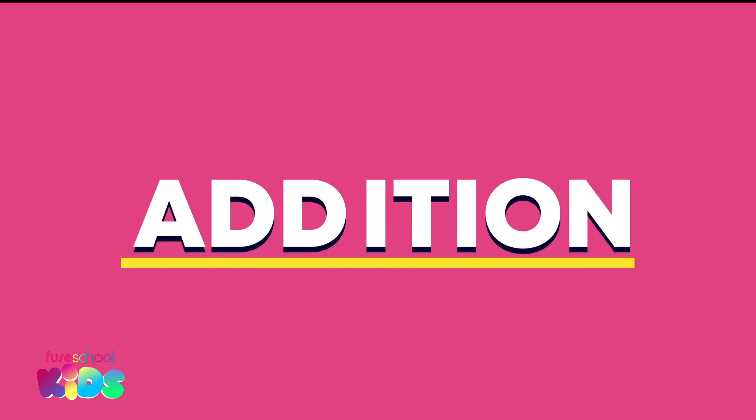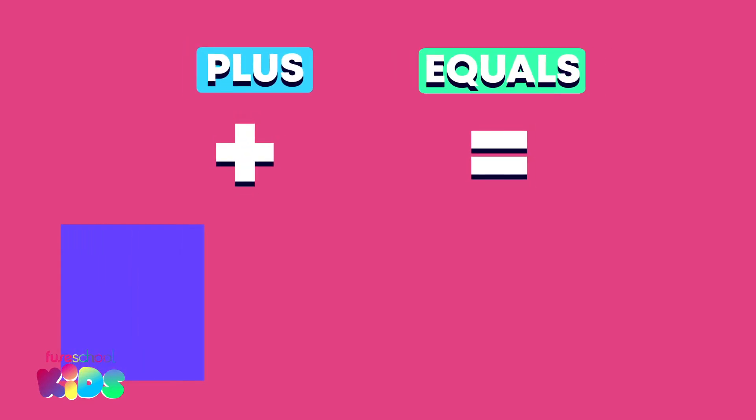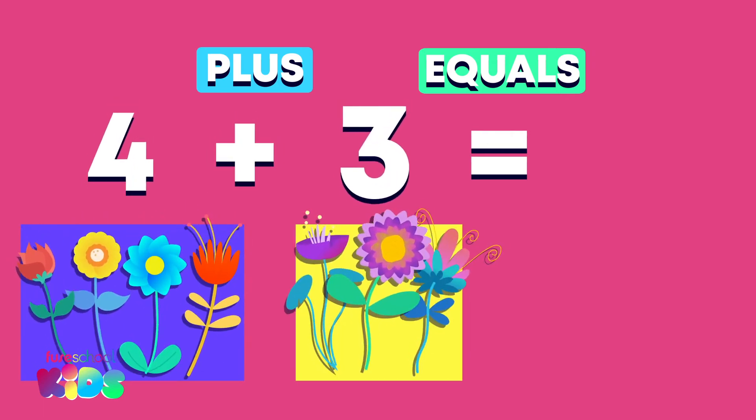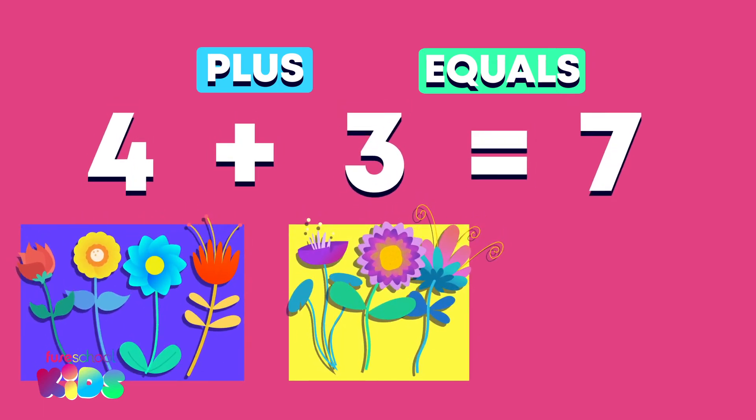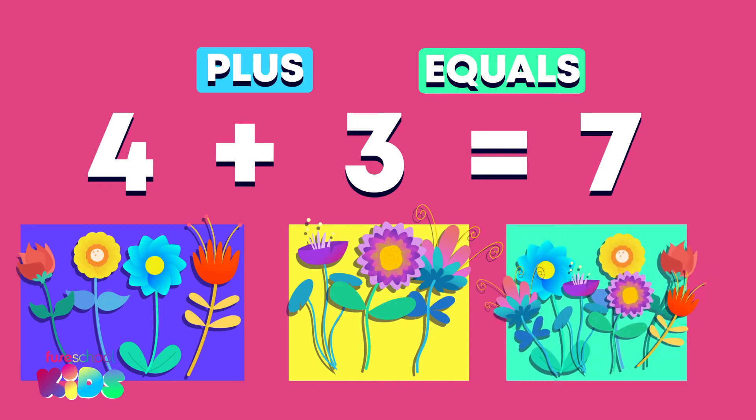When we put or add objects together, it is called addition. Repeat after me, addition. We write addition number sentences using a plus and equal sign like this. Four plus three equals seven. A number sentence is made up using numbers and signs. The plus sign tells us we are adding or putting numbers together. Plus means addition. The equal sign tells us how many we have all together.